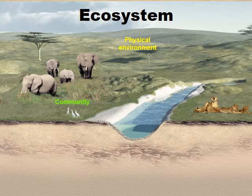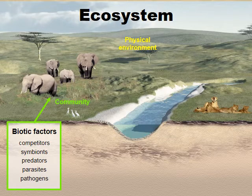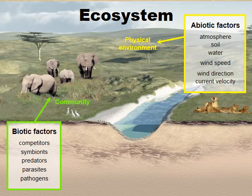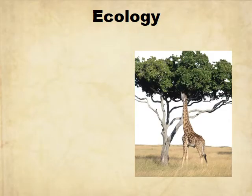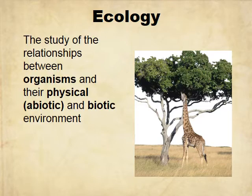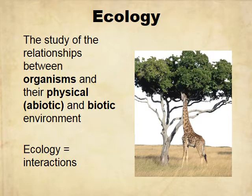Ecosystems are made up of physical environments and the communities that live in them. They consist of biotic and abiotic factors. Your biotic factors are all living things, and your abiotic factors are non-living things. That brings us to ecology, which is the study of the relationships and interactions between abiotic and biotic environments.